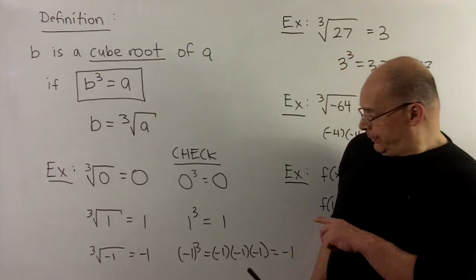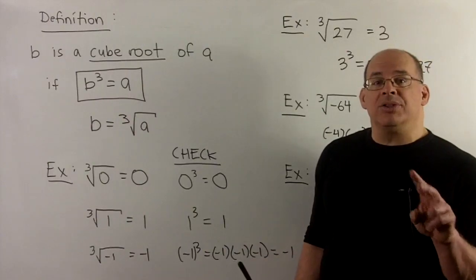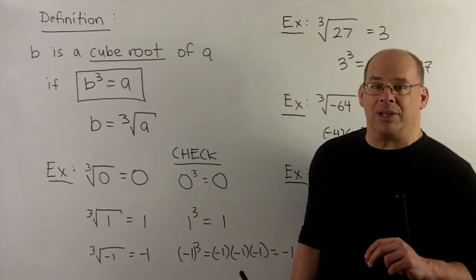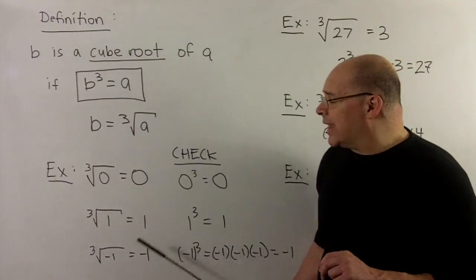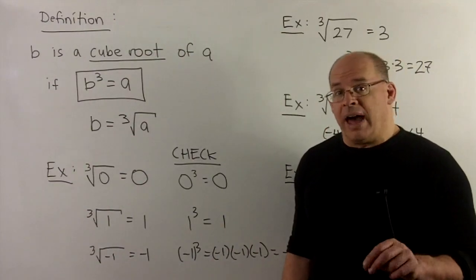So 3 minus 1s, 2 of them are going to turn to a plus, leaving us with the minus 1 that we expect. So that checks out. So no longer undefined.